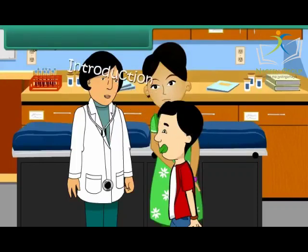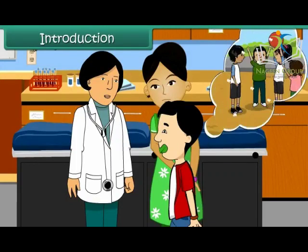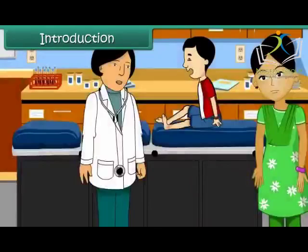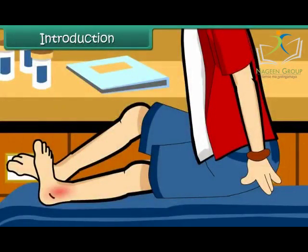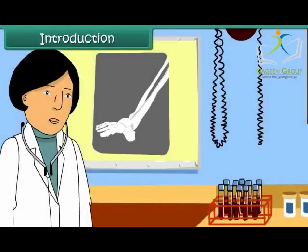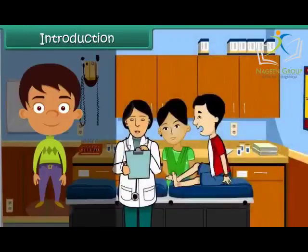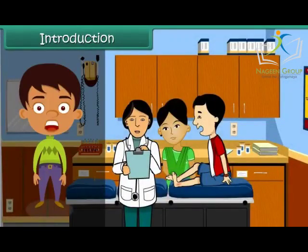Girish is at the hospital. While playing with his friends at school, he twisted his ankle. His ankle is swollen and he is in terrible pain. He is unable to move his feet. The doctor examines him and tells him that he has suffered a bone dislocation. She prescribes medicines and advises bed rest for four days.